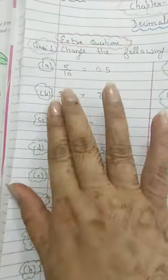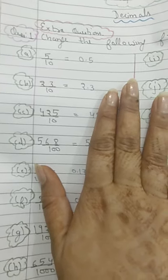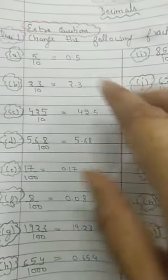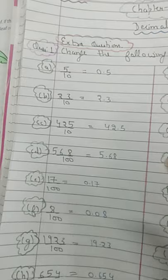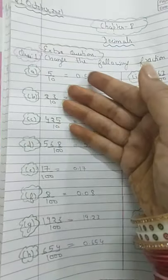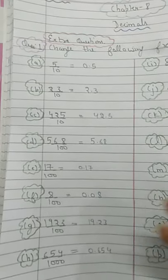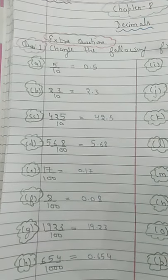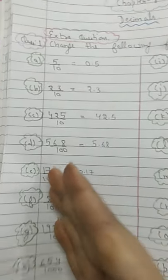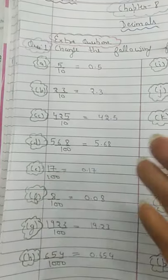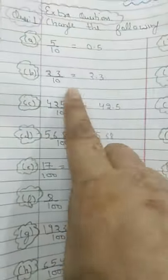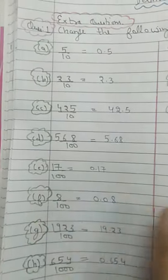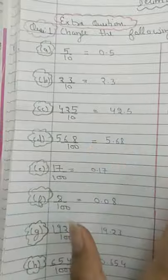Please remember: in this class we consider only this type of fraction because this is the introduction of decimals in fifth class. In higher classes, you can have any number in the denominator and change it into decimals. Don't think that 10, 100, or 1000 will always come in the denominator — it's not like that. This type of fraction with 10, 100, 1000, 10,000, or lakh in the denominator we call decimal fractions. We call them decimal fractions because we do not need to divide — normally to find the decimal representation we must divide, but with these denominators we can simply convert directly.